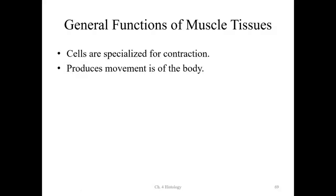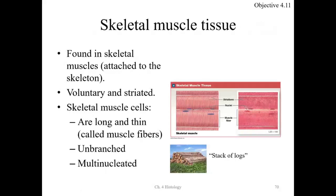We'll start with skeletal muscle. Skeletal muscles are found attached to your skeleton. They are called voluntary because you can control them, and they are called striated because when you look at the tissue, there are lines that show up.